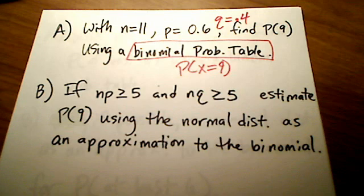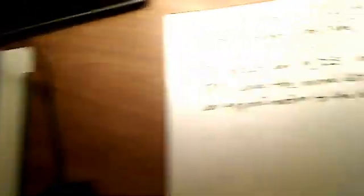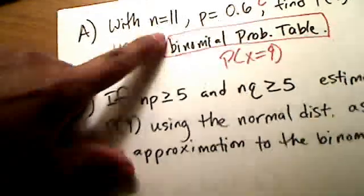I'm going to use the table in the back of my book. I have n equal to 11. This is page 750 in my book — here is where n equals 9, n equals 10, n equals 11. I'm looking up an x value of exactly 9, so I'm going to scoot all the way down to 9.